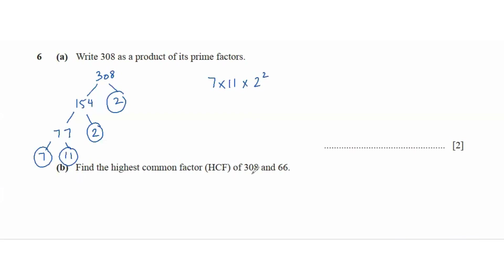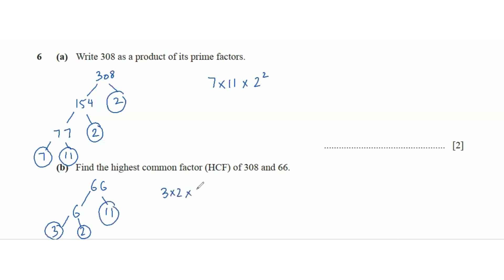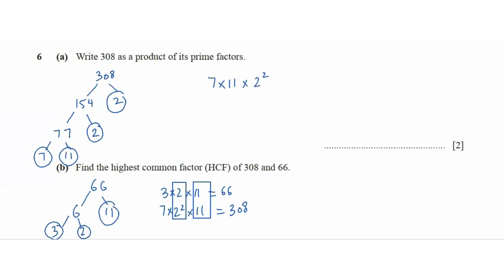Then find the HCF of 308 and 66. Splitting 66: 66 is 6 times 11, and 6 is 3 times 2, so 3 times 2 times 11. For 308 we had 7 times 2 squared times 11. The common factors are 11 and one 2, so 2 times 11, which is 22. This is our highest common factor.